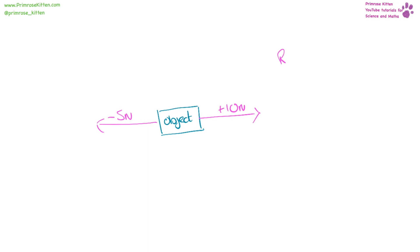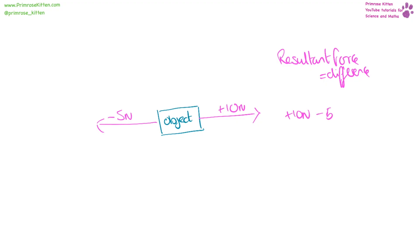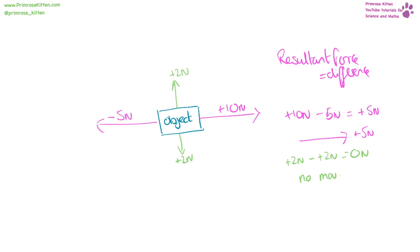If we're looking for the resultant force, we need to find the difference between them. For example, here we have 10 plus 10 Newtons minus 5 Newtons, giving us plus 5 Newtons in that direction. For the second one, we have plus 2 Newtons minus plus 2 Newtons, giving us zero Newtons as the overall resultant force, so there is going to be no movement.